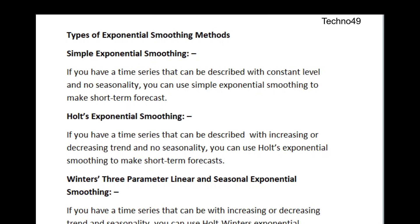First of all we need to understand how many types of exponential smoothing methods we have. The first one is Simple Exponential Smoothing. The definition says that if you have a time series that can be described with a constant level and no seasonality, you can use Simple Exponential Smoothing to make short-term forecasts. When you have the data in front of you and you see that the call volume is at a constant level with no seasonality and no increasing or decreasing trend, you can use this method.